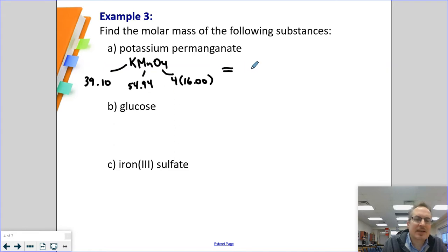Therefore, my molar mass number is going to be 158.04 grams per mole. The nice thing in Chem 20 is I don't have to see your work. You can do all this work on your calculator. So, literally, 39.10 plus 54.94 plus 4 times 16, enter. Make sure you're getting the right answer.